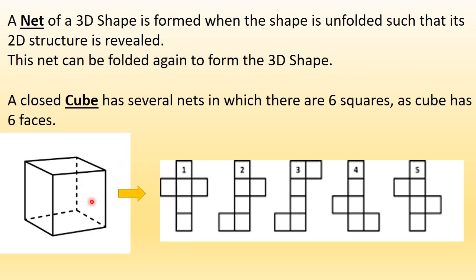Basically, this cube is formed when you join six squares together. You can count the squares — 1, 2, 3, 4, 5 and 6. So when you join six squares together, you form a cube. But if I just open up this cube, what would I get? I would get a net. In this net, I would get six squares. If I fold this net again, I will form a cube.